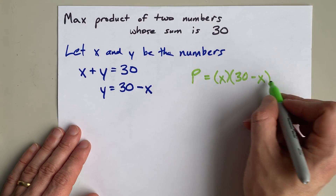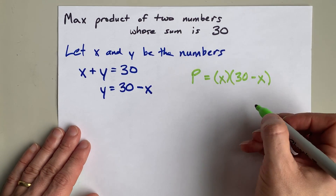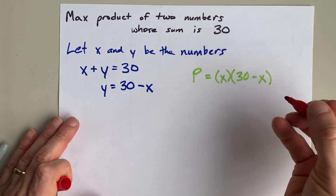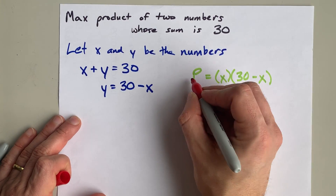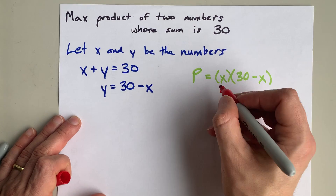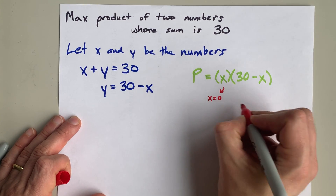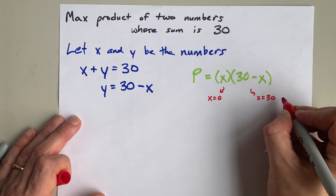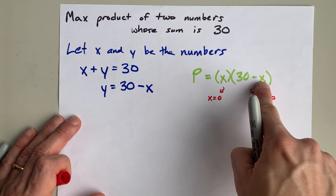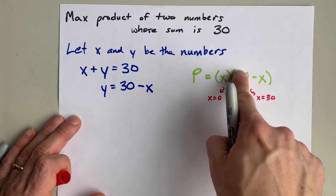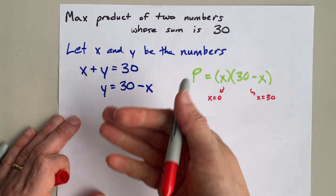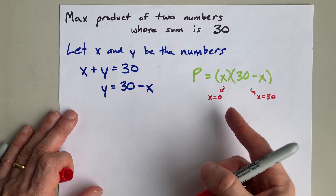This is a parabola. You can put it in standard form and find the vertex. Because this is already kind of factored, I'm going to treat it as factored form. P has x-intercepts — the product is zero — when x is either zero or x is 30. Because if x is 30, then 30 minus 30 gives the other zero, and these multiply to give a product of zero, which is obviously not going to be our maximum.